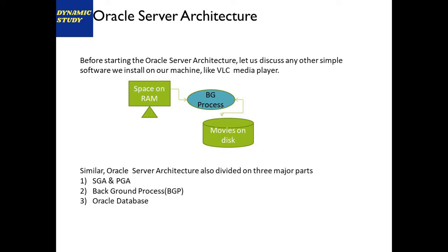Similarly in Oracle, there are three components. First, on RAM: SGA — Shared Global Area — and PGA — Personal Global Area or Programming Global Area. Second, background processes that support moving data from storage on the hard disk to RAM so that clients can access it. Third, the Oracle database itself, which is stored on the hard disk.